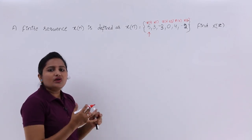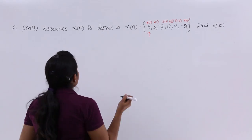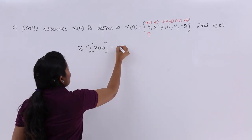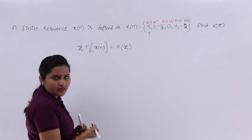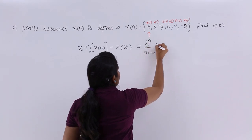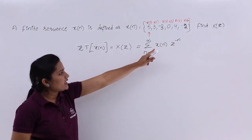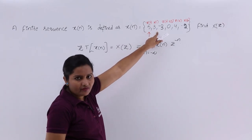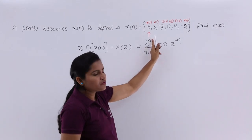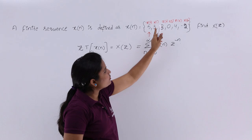They are asking for the Z transform of the finite duration sequence x of n. The Z transform of x of n is represented as X of z, and is given by: X of z equals summation from n equal to minus infinity to infinity of x of n times z to the power minus n. Since our signal exists only from n equal to 0 to 5, we can limit this summation to n equal to 0 to 5.